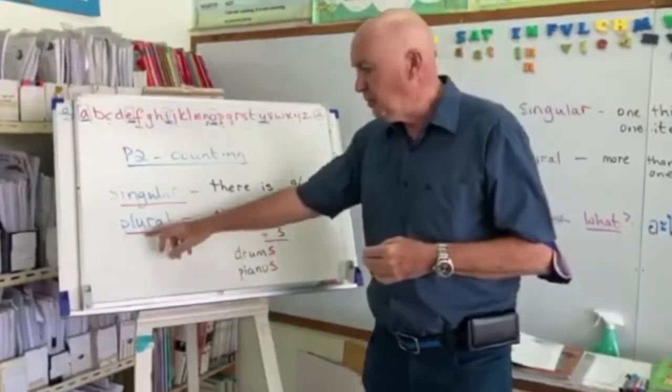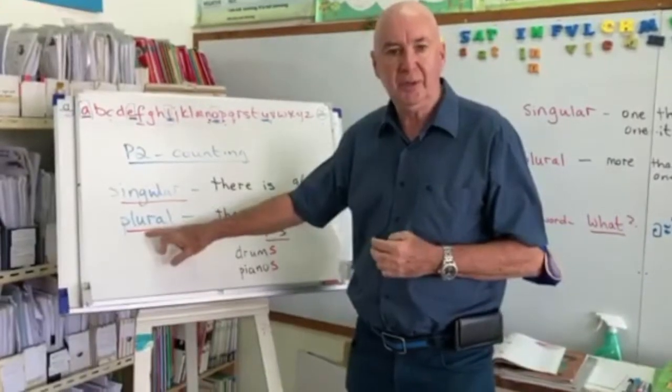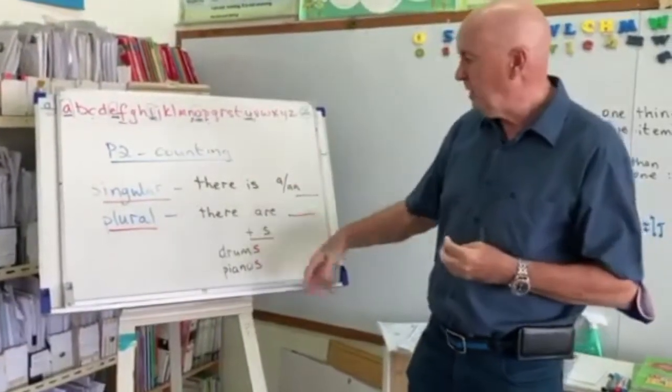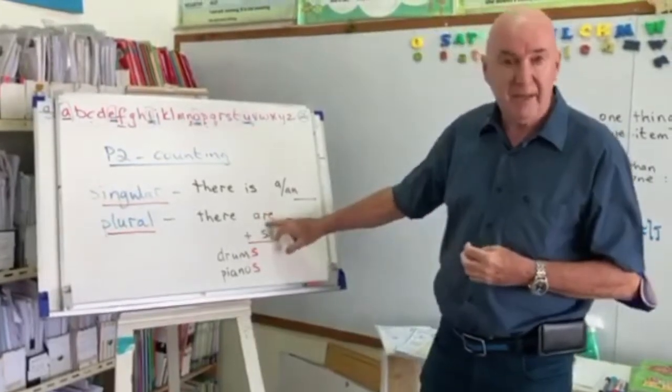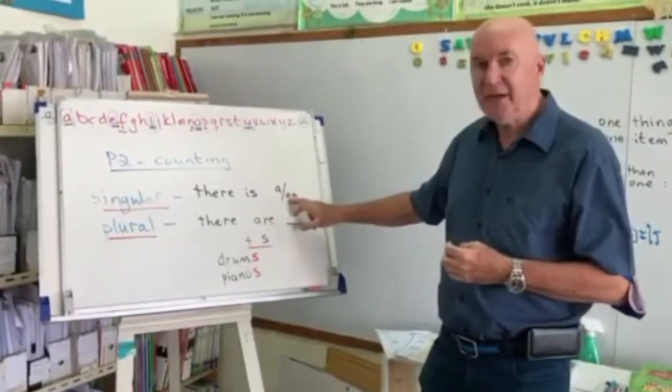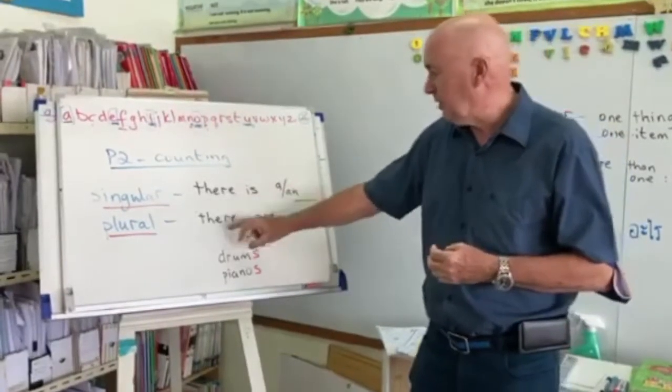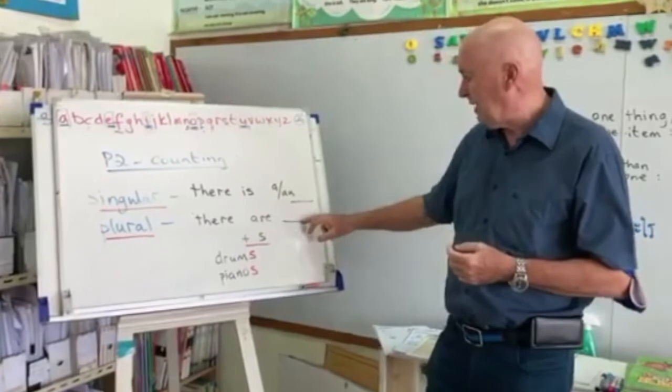More than one, we have to use plural. Plural means more than one, two, three, four, whatever. And then we have to use there are. And you cannot use a or an, because a or an means one. Plural, more than one, so you just put there are.